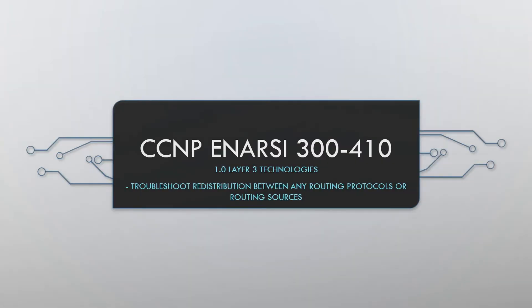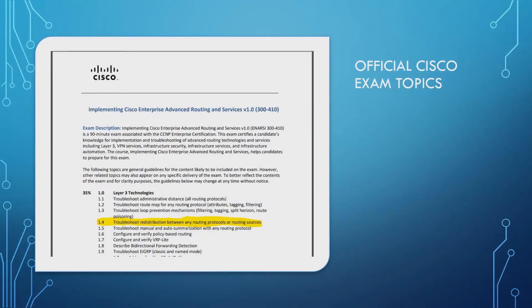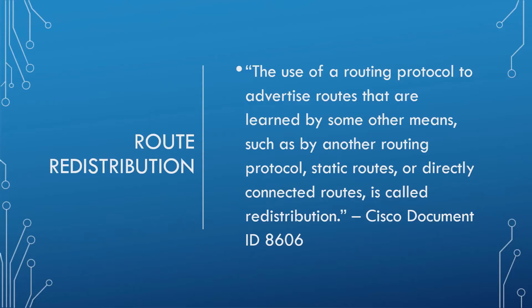Welcome to the next video in the ANASI series from Your IT Explained. In this video we're going to go through troubleshooting redistribution between any routing protocols or routing sources from a theory perspective. This comes directly from the official Cisco examination topics 1.4.